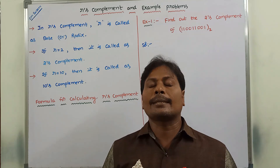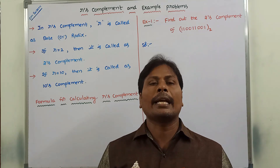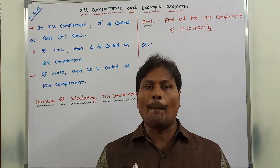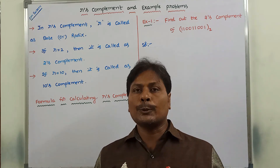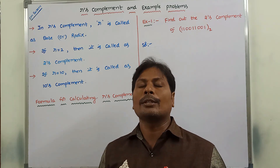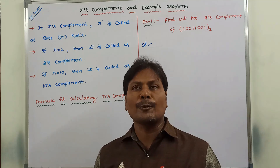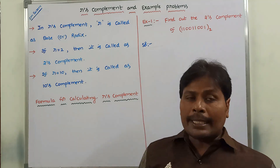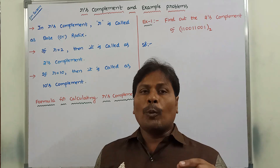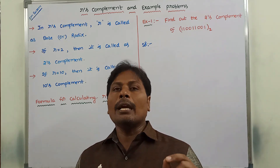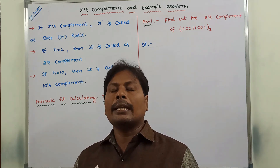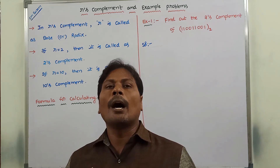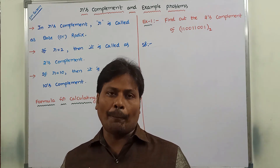The first one is R's Complement. The second one is R-1's Complement. These are the two types of complements generally used in Digital Electronics. In this video, we will discuss only R's Complement. In the next video, we will discuss R-1's Complement.